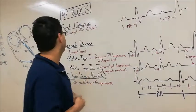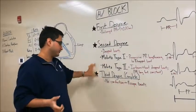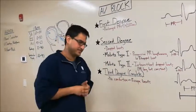Now, something important to note is that in first and second degree type 1, you tend to be asymptomatic. Whereas in second degree type 2 and third degree, you tend to have symptoms like dizziness and syncope.